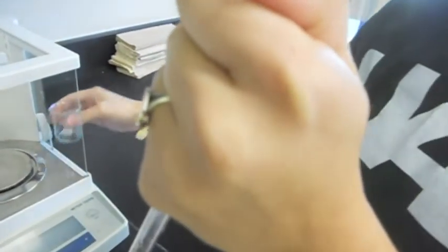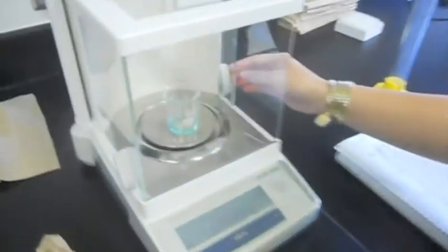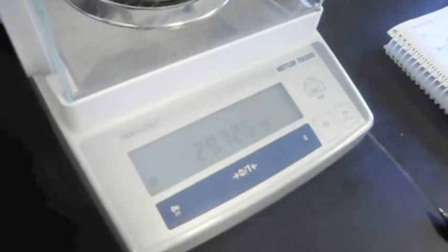You're going to subtract volume final from volume initial to get the volume that's transferred. Then you're going to measure this using the analytical balance. You get 30 grams.